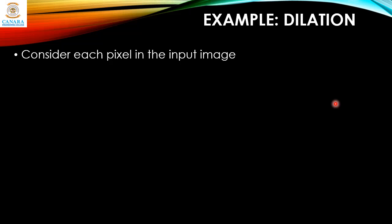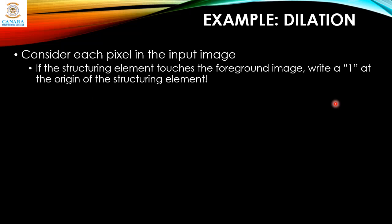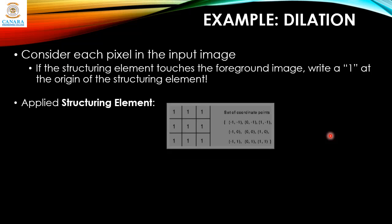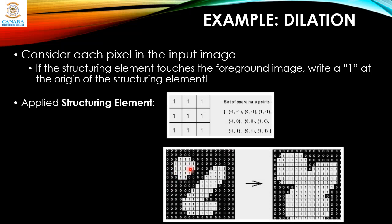Consider each pixel in the input image. If the structuring element touches the foreground, write a one at the origin of the structuring element — this is basically how we perform dilation. Here is the structuring element we are going to apply and here is the example image with two objects in it: zeros are the black region and ones are the white region, with a separation between these two elements. When we move the structuring element around these objects, they become dilated.